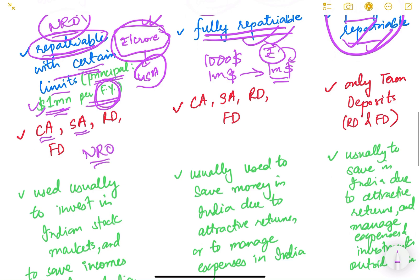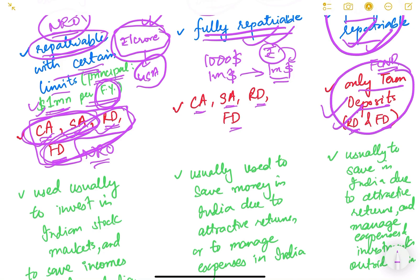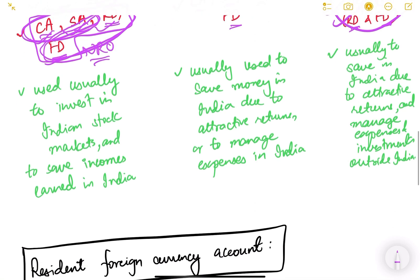Regarding account types: an NRO account can be a current account, savings account, recurring deposit, or fixed deposit — all four types are allowed. Similarly, an NRE account also allows current accounts, savings accounts, recurring deposits, and fixed deposits. However, for FCNR accounts, only term deposits — that is, recurring deposits and fixed deposits — are allowed.